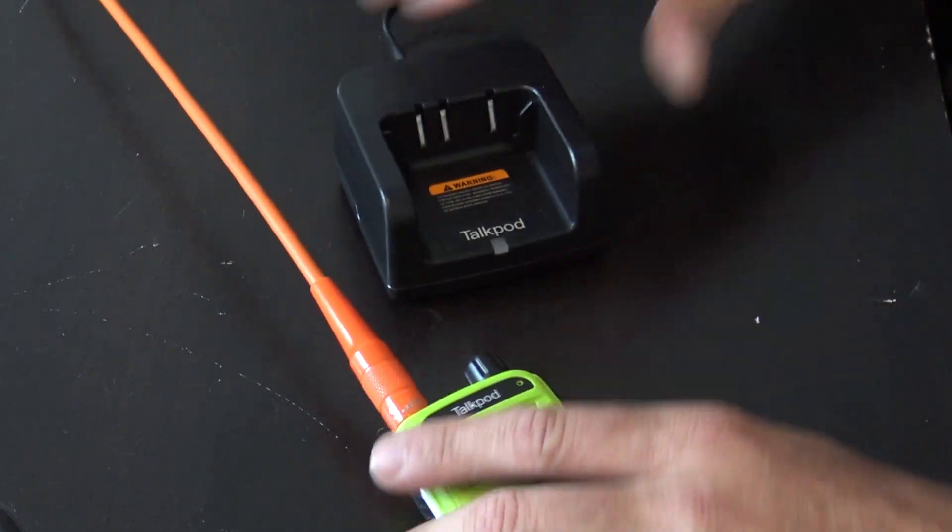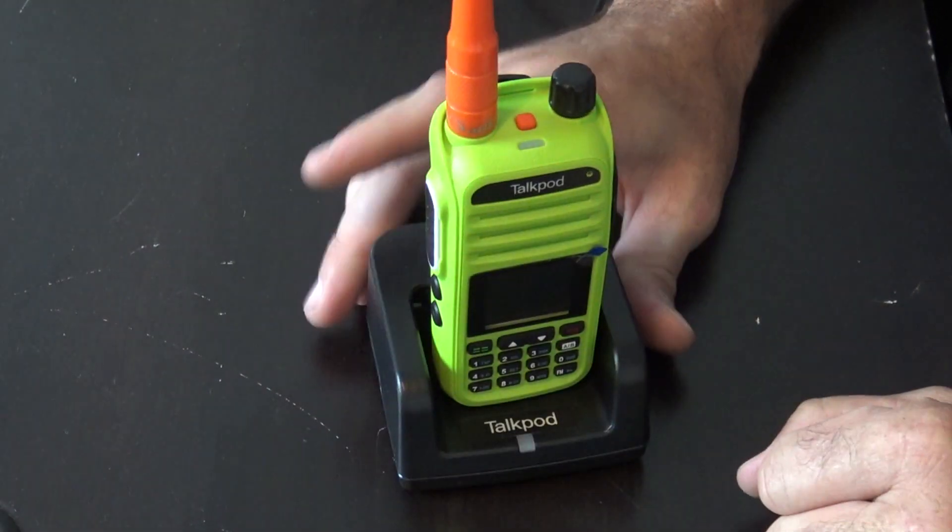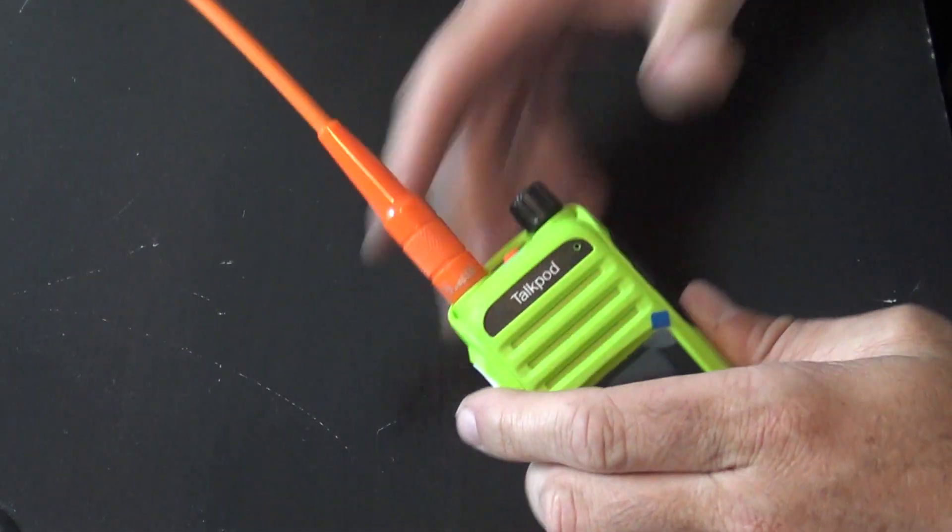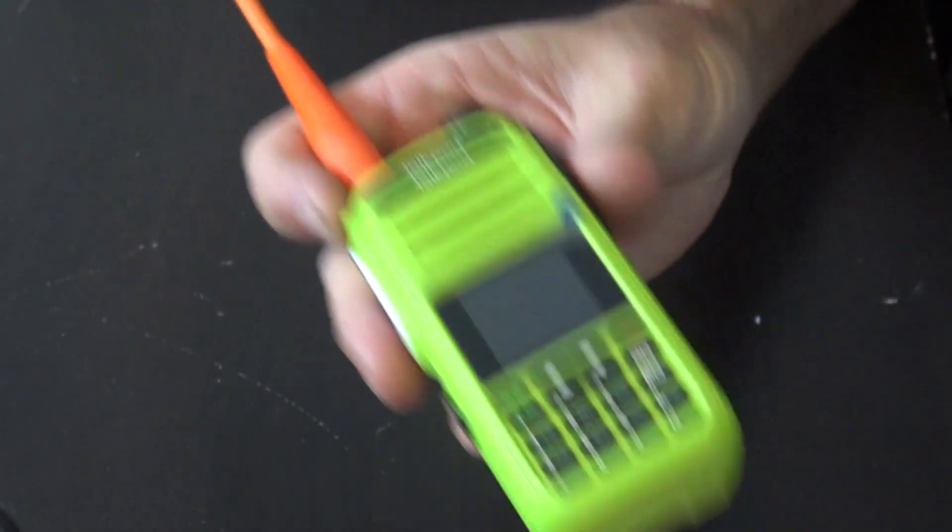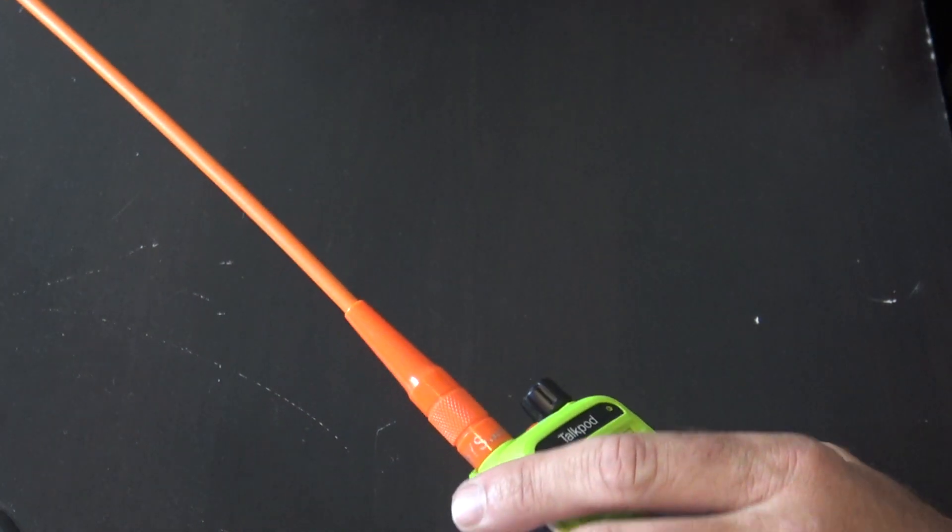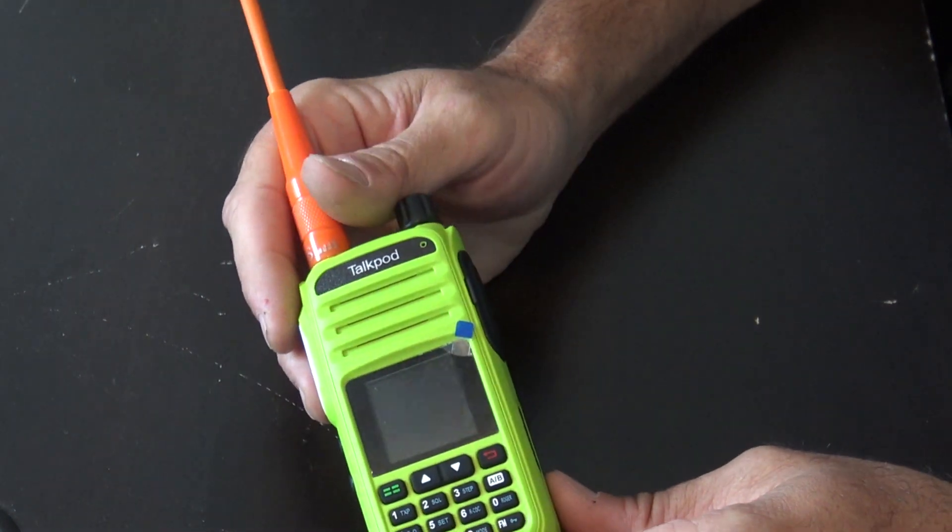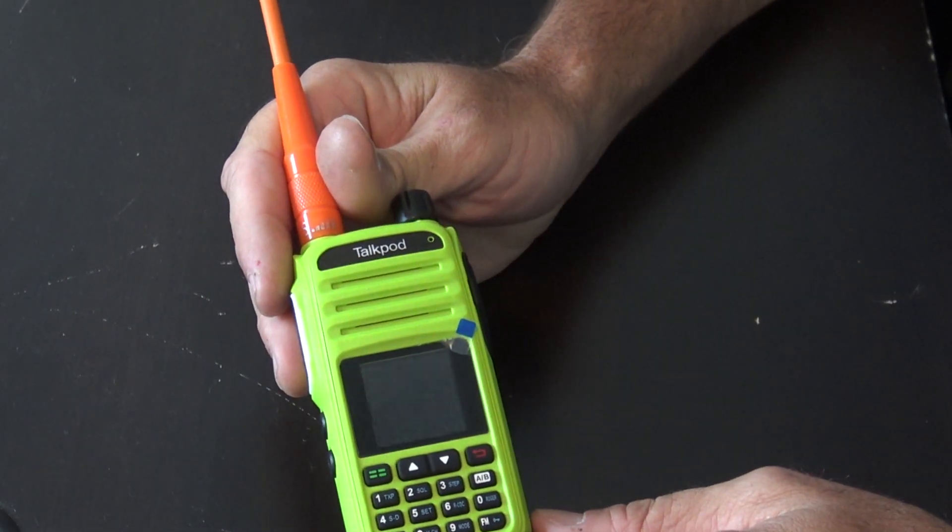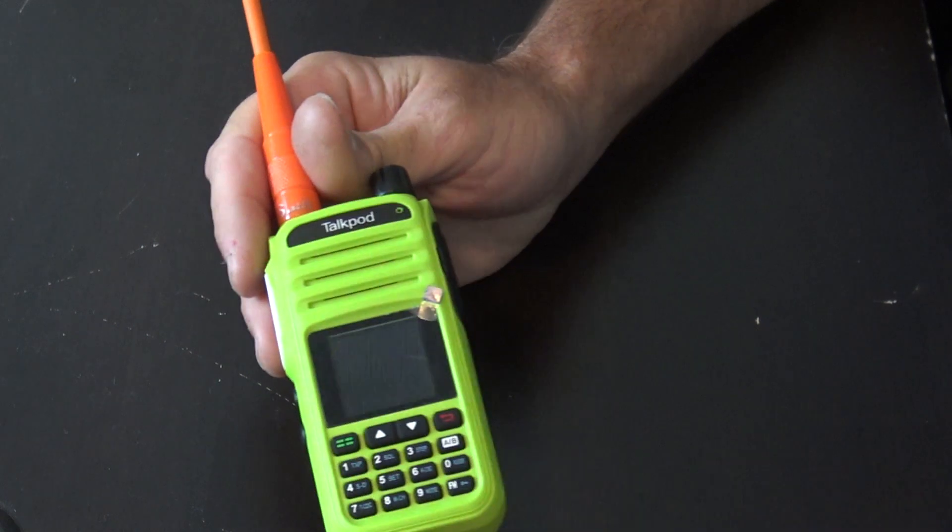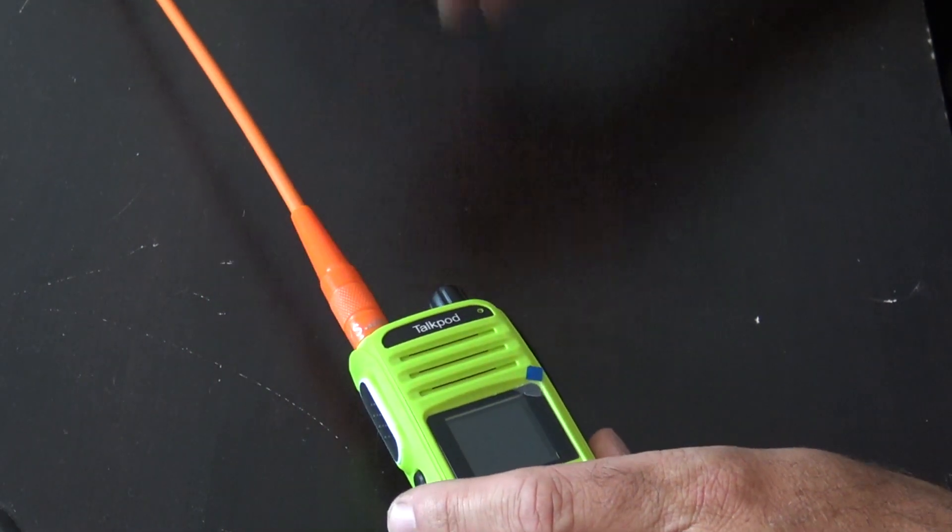It does have a drop-in charger as a lot of these radios do. But what I like about this one is it actually has USB-C fast charging in the back. That's great if you have a battery bank. You can charge this at a battery bank, keeping this in the go kit would be beneficial.